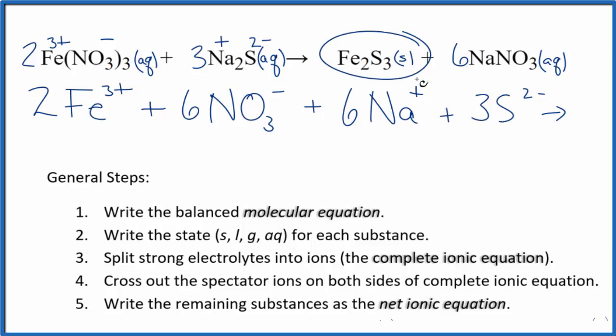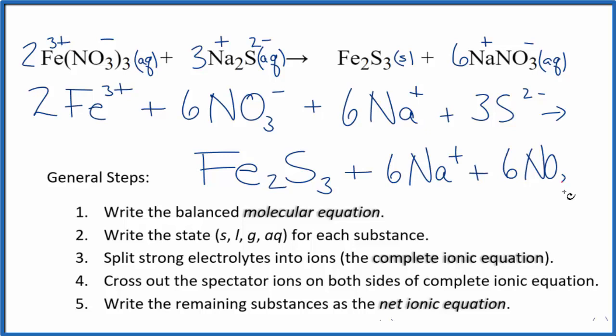For the products, we don't split solids apart. We're just going to write Fe₂S₃. And then we have plus and minus here. So six sodium ions, just like the reactants, plus six nitrate ions. And these are the products in our net ionic equation.